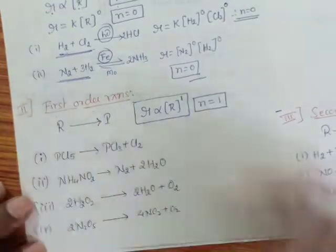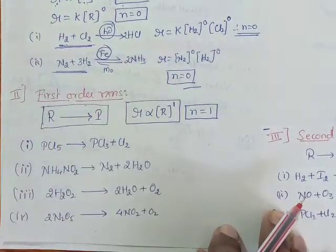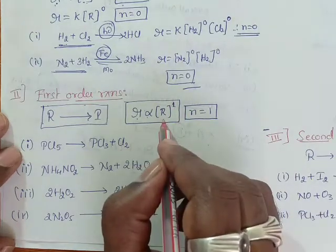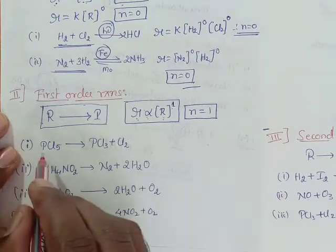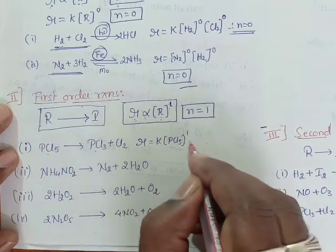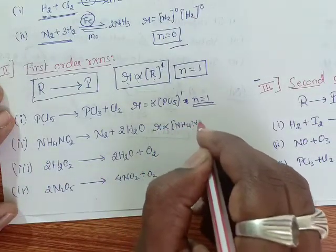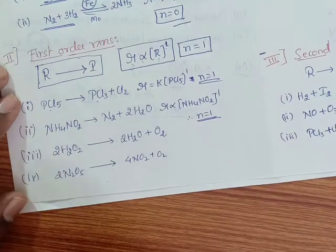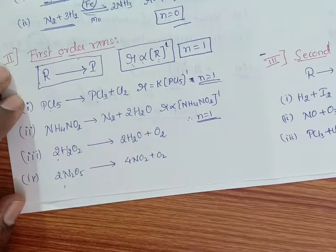Next, coming to first-order reactions. The rate of reaction which is directly proportional to the first power of the molar concentration of the reactant is called a first-order reaction. For example, PCl₅ dissociates to PCl₃ and Cl₂, so R = K[PCl₅]¹, therefore N = 1. Also, NH₄NO₂ (ammonium nitrite) decomposes, giving R = K[NH₄NO₂]¹, so N = 1. Note that the coefficient 2 in the balanced equation does not affect the order — order depends on the experimentally determined method, not the balanced equation.